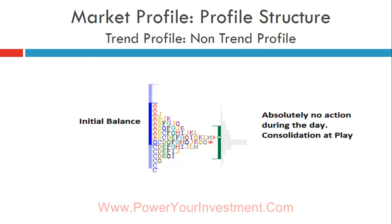In a non-trend profile, the market breaches the initial balance and we expect a trend or normal variation day, but nothing happens — price rotates back, forms a value area, and stays there. A trader gains nothing out of it. The price remains in the center with little movement. These days typically come when the VIX is low. You have to relate market profile with volatility — if you look for a non-trend day when VIX is above 20, you'll be surprised more often than not.